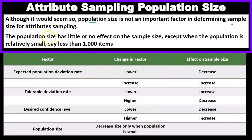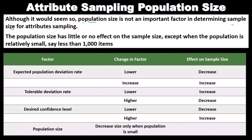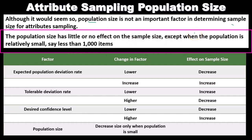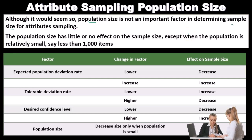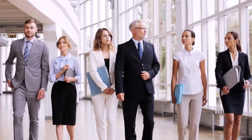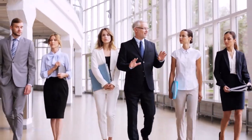For attribute sampling, population size is not an important factor in determining sample size. This is counterintuitive — you might think that a bigger population requires a bigger sample to represent it, such as polling an entire country about voting preferences. But that's generally not the case when dealing with large numbers.